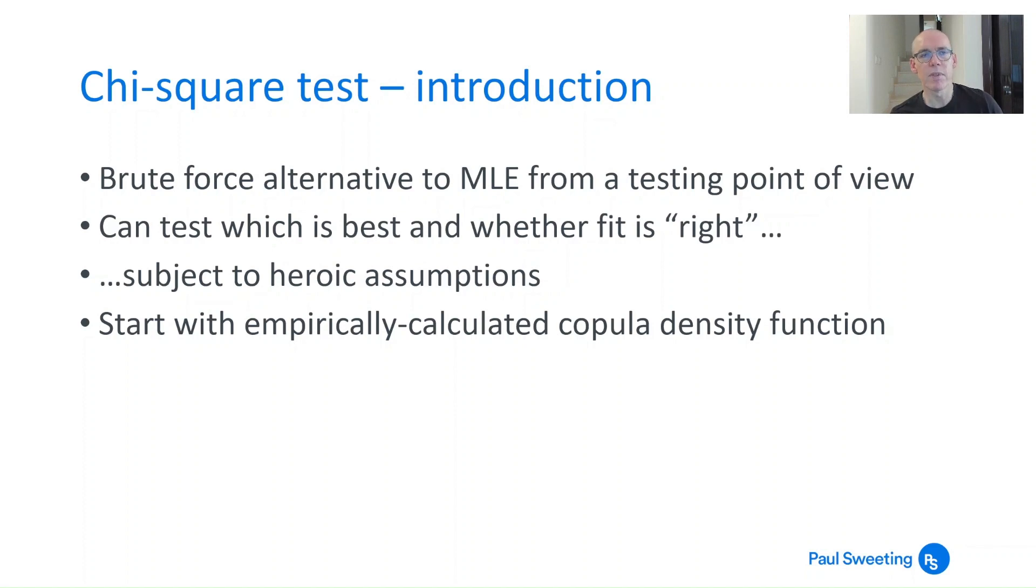And that approach is the chi-square test. It's a test which can tell you what the best fit is and whether that fit is right, subject to some interesting assumptions. Essentially the key assumption is that in each of the cells that you're testing, if your observations are wrong, at least they're normally distributed. So that's a pretty big assumption, but if you can live with that, it's not entirely terrible.